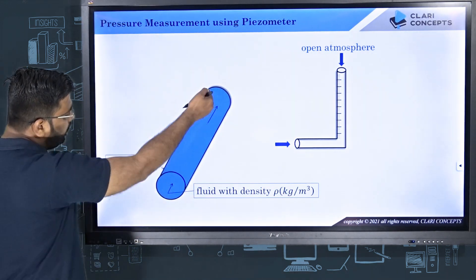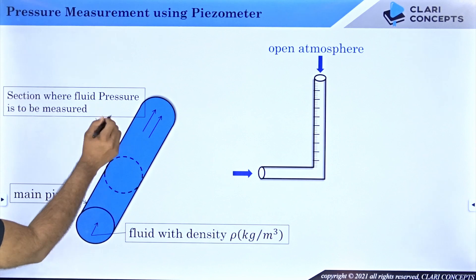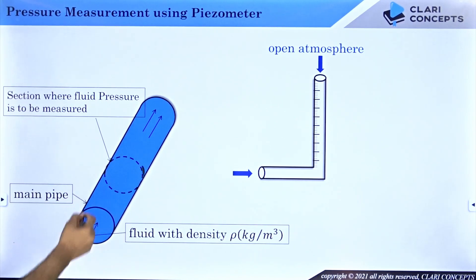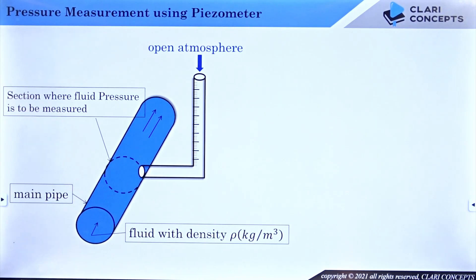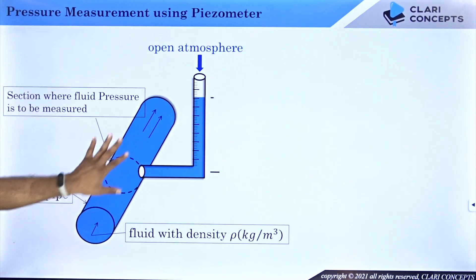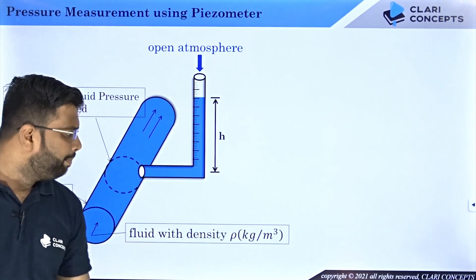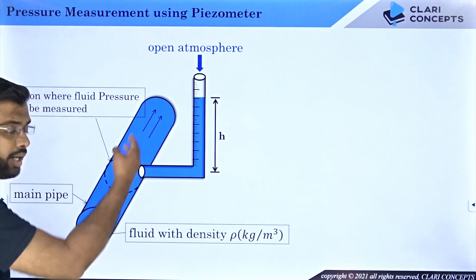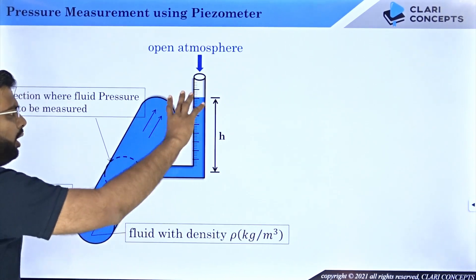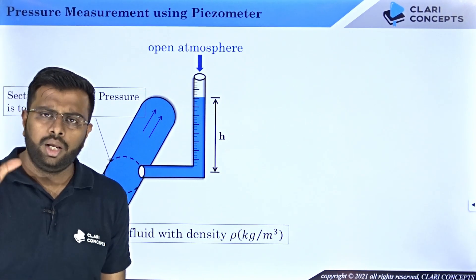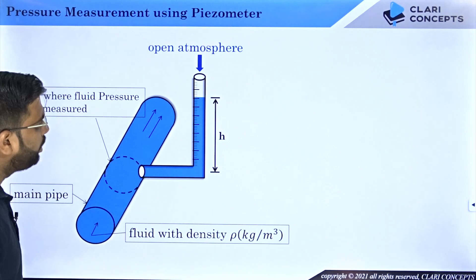Let us say I have a main pipe where fluid is flowing — the fluid has a density of ρ kg per meter cube — and here is a section where I want to measure the pressure of this flowing fluid. I will drill one hole and insert this piezometer tube into the pipe. When you insert it, the fluid from the main pipe will start flowing out into the piezometer tube and will climb to a particular height. Intuitively, if pressure within the fluid is very high then the height climbed by the fluid in the piezometer will also be high; if pressure is lower, the height will be lower. So there is a direct proportional connection between pressure and the fluid height in the piezometer tube.